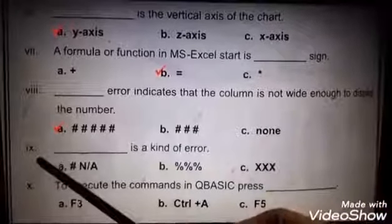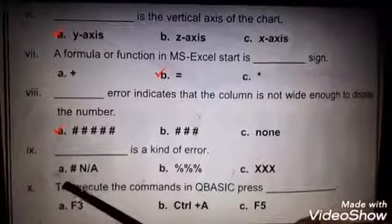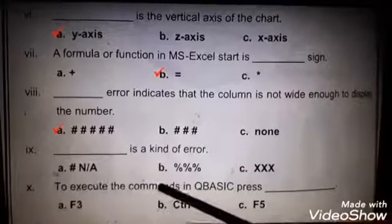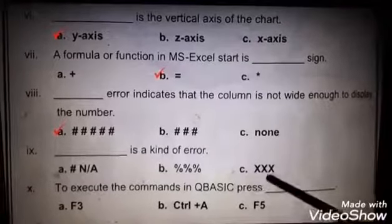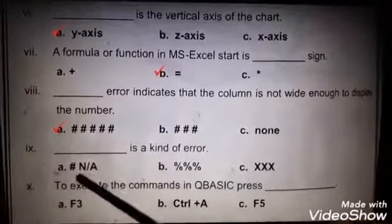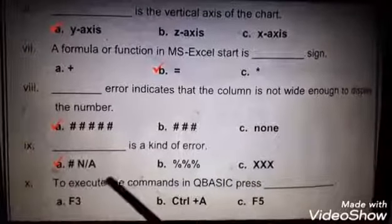Number 9: Dash is a kind of error. A: hash not available, B: percentage percentage percentage, C: triple X. Right answer is option A. Is ka matlab hai value not available. Yeh bhi hai jo error ki ek type hoti hai MS-Excel mein.